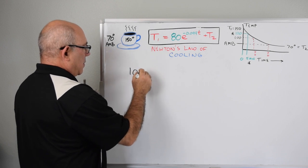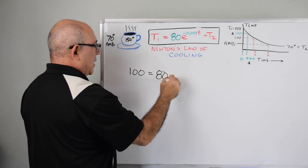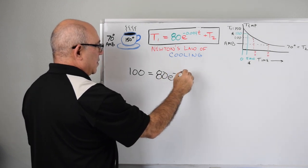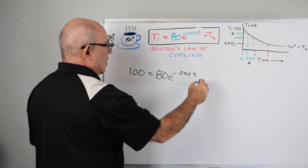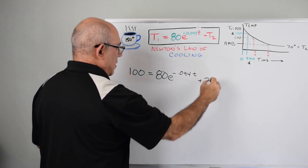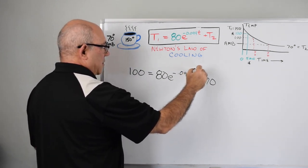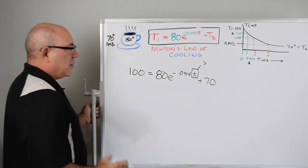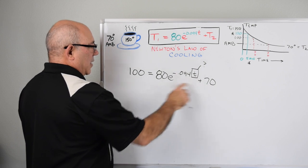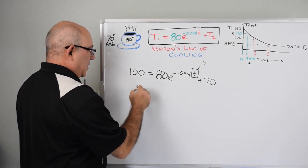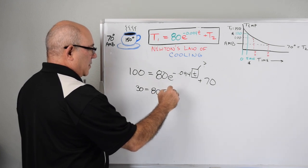We'll plug in 100 here for T, and we have 80 e to the minus 0.094 times time plus 70. What we have to do is find this time - that's what we need to know. The way we're going to solve this is very similar to how we found K before.